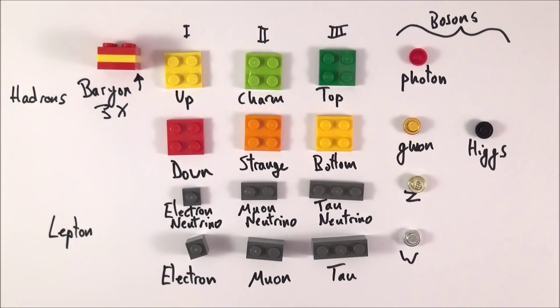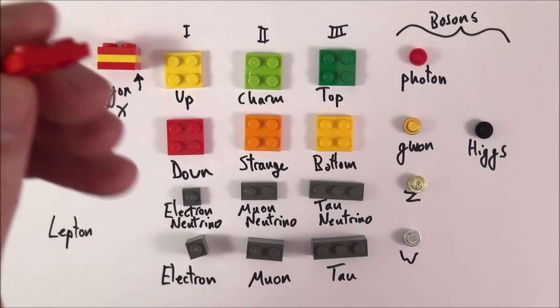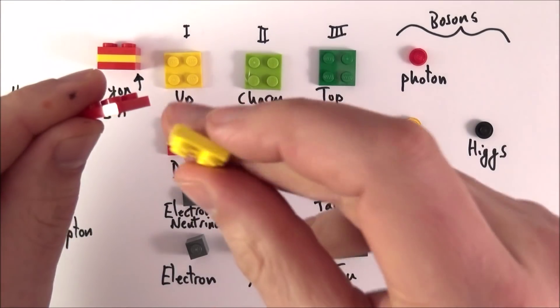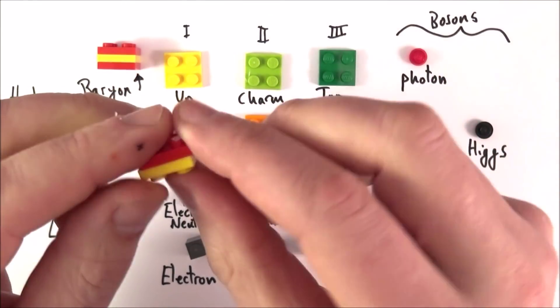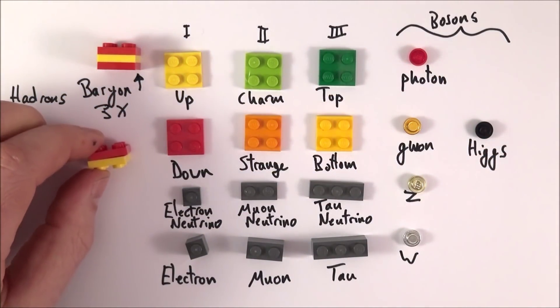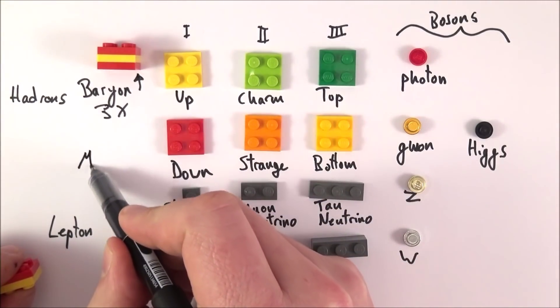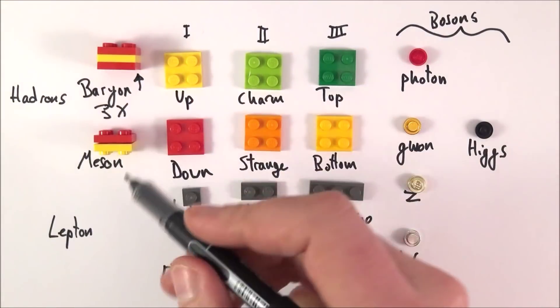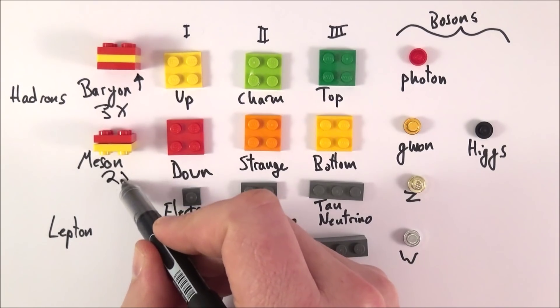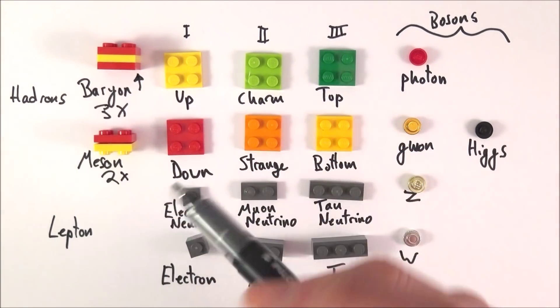A baryon is made out of three quarks, but we can also have things made out of two quarks. In this case, you might have a quark and an antiquark. If you combine a quark and an antiquark together, what we get is something called a meson. This meson is made out of two quarks, one which is a normal quark and another antiquark.